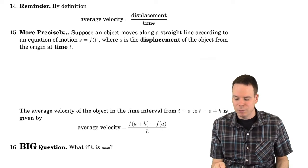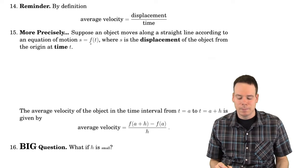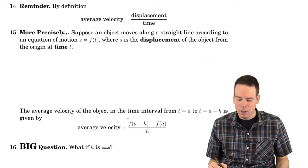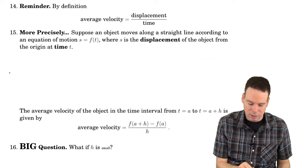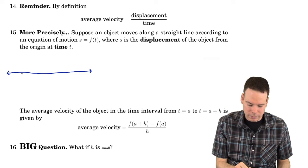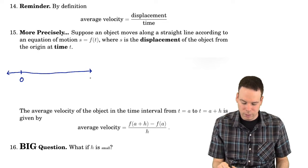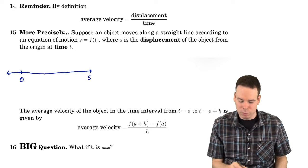More precisely, let's suppose we have an object moving along a straight line according to an equation of motion s equals f of t. At any given time we can figure out exactly what its position is, where its position is the displacement of the object from the origin at time t. So we've got this s-axis and maybe there's an origin somewhere on it, some frame of reference on this axis, and the particle's moving along it.